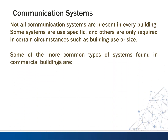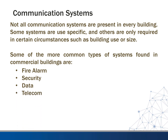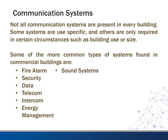Some of the more common types of systems you'll find in commercial buildings include things like fire alarm, security system, data system, telecom systems, intercom systems. You might also see energy management systems, a sound system, or a sound masking system.